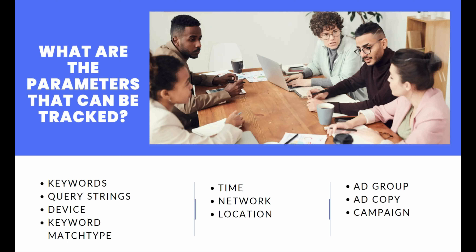Location is very important — from where you are getting sales. Suppose you are running a campaign throughout India and getting sales from particular areas like South India, Hyderabad, or Ahmedabad. This tool provides all the information based on locations, which is very important to scale your campaign. Finally, at the campaign level, you can see which campaign, which ad copy, and which ad group are converting into sales. These are the 10 parameters, but we can also scale on the basis of other parameters too.